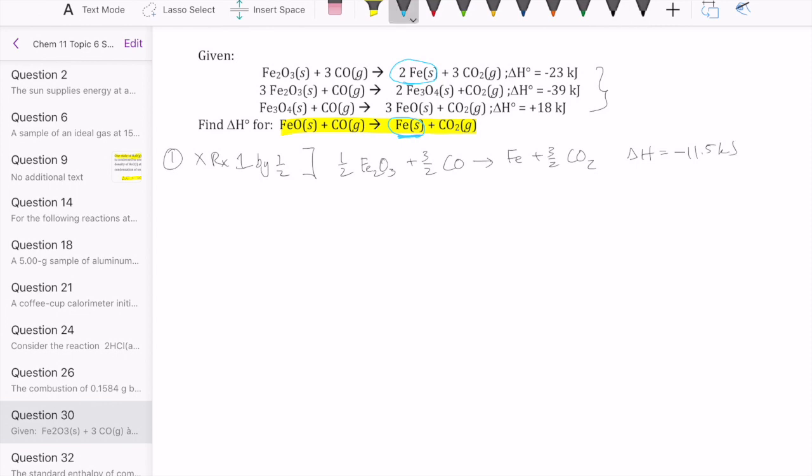Then another one we look at is FeO. In the target, that has a coefficient of 1 and it's on the reactant side. If we look at our given reactions, the only one that contains FeO is reaction 3, and so we need to do two things with reaction 3 to make it look like the target. We need to reverse it and then multiply it by a third.